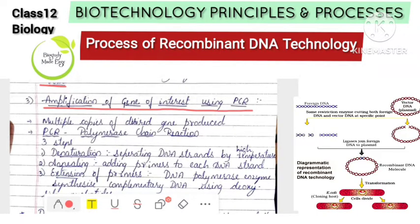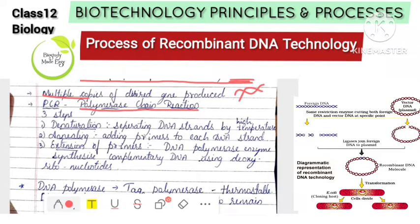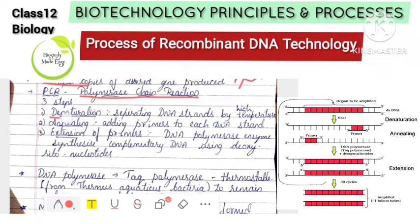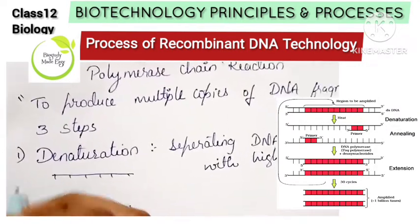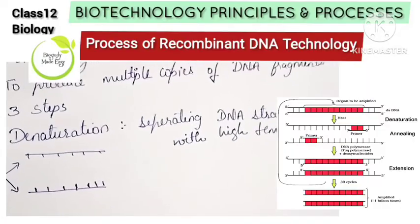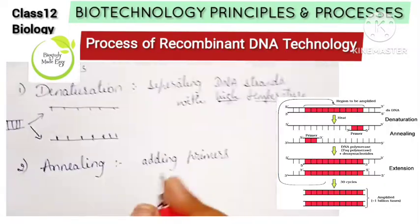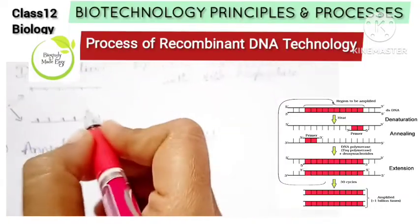The third step is amplification of the gene of interest using PCR — polymerase chain reaction. PCR has three steps. The first is denaturation: the double-stranded DNA is separated into single strands using high temperature. The second step is annealing: primers are added to the single-stranded DNA.